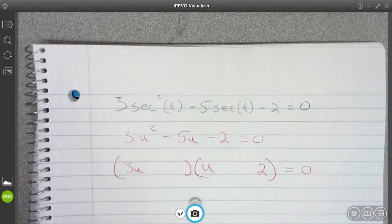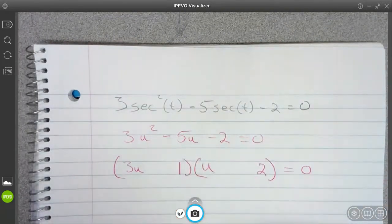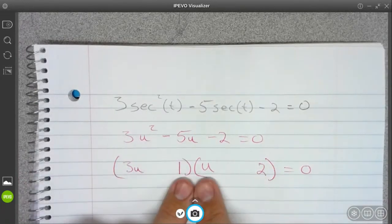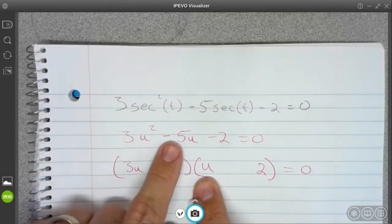It's going to be a 2 here and a 1 there. And I know that because this will give me 6 and this will give me 1 and I can get a 5 out of that.